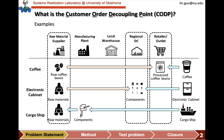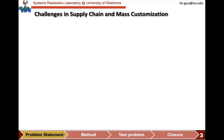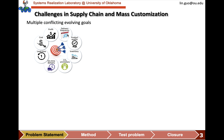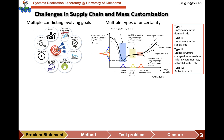Why is it important to position the CODP in the right place in the right form? Because of the challenges in the supply chain. There are multiple evolving conflicting goals in the supply chain, and in different circumstances the priorities of the goals change. Another challenge is the multiple types of uncertainty we need to manage. As in any complex system, a supply chain encounters four types of uncertainty. The first two types are the variation in parameters and variables, which in the supply chain are the uncertainty in demand side and supply side.